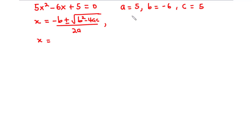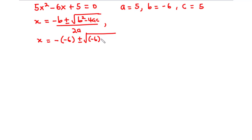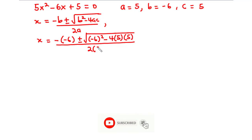Substituting these values into the quadratic formula, we have negative of negative 6, plus or minus the square root of negative 6 squared minus 4 times 5 times 5, all divided by 2 times 5.